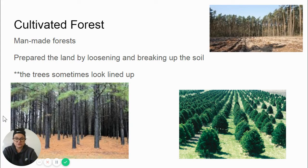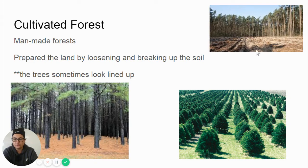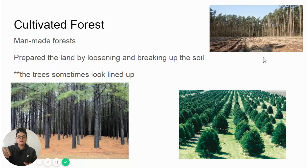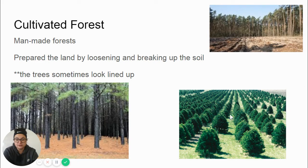Here are some pictures of cultivated forests. If you see here, this is a cultivated forest because you can see that a human or a machine helped loosen and break up the soil. It kind of looks like it's in lines — a human or machine went and tilled the soil so that they could plant a tree and the tree would grow there. A good sign of a cultivated forest is if the trees are in lines.